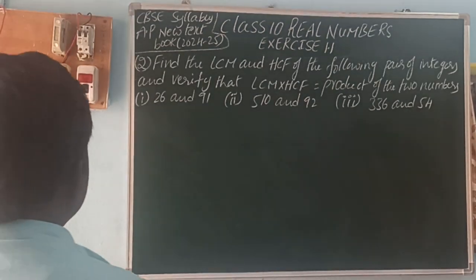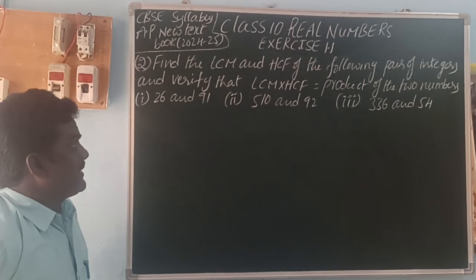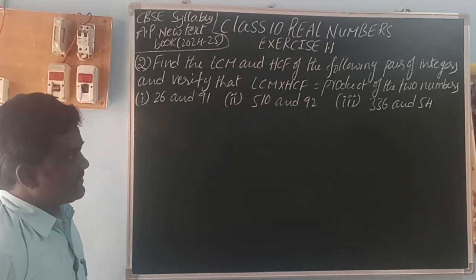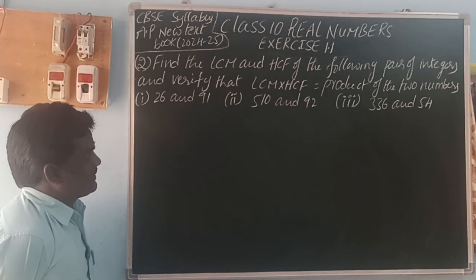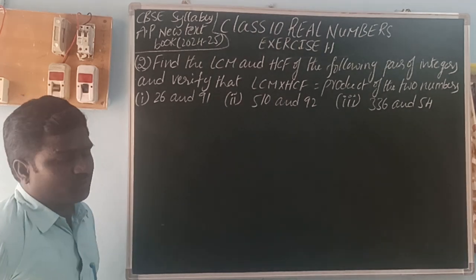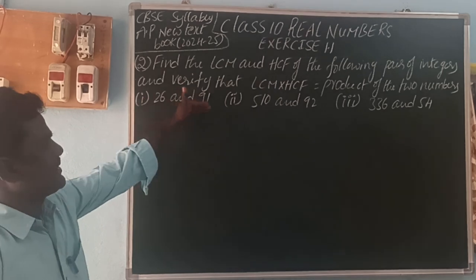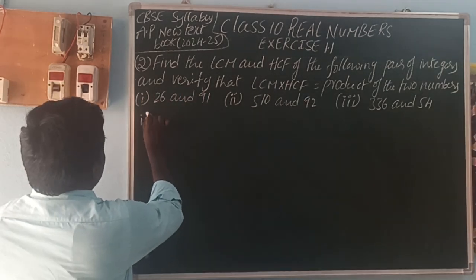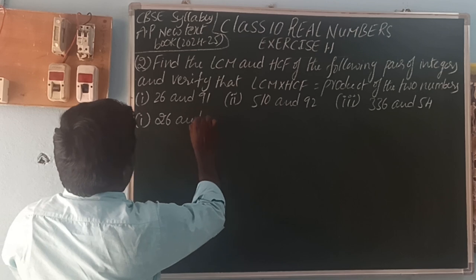Next, the second exercise: Find the LCM and HCF of the following pairs of integers and verify that LCM × HCF equals the product of the two numbers. The first pair is 26 and 91.